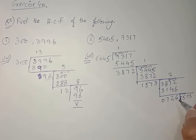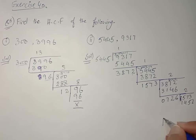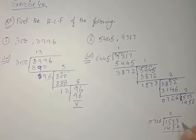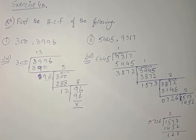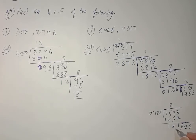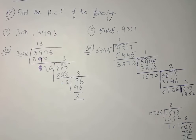Now 726 is multiplied with two, the answer is 1452. Two times 1573 is 1452. If we subtract, the answer is 121 and 726 comes into the bracket. Now 121 multiplied by 6 gives 726, so the question is ended here.